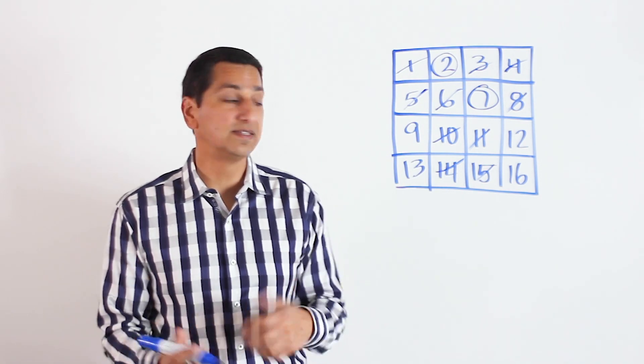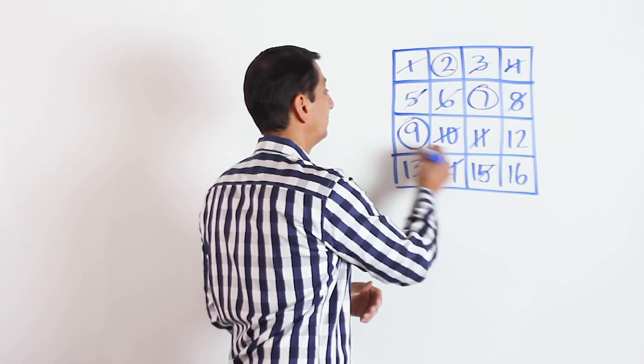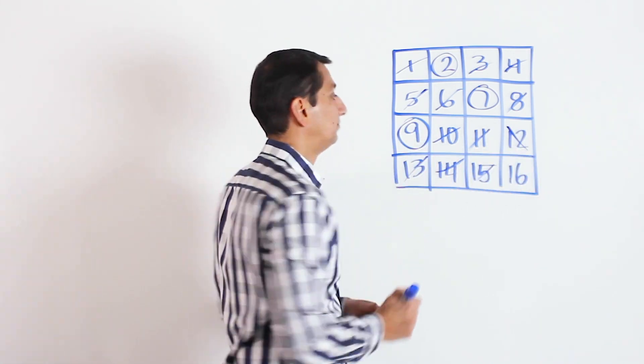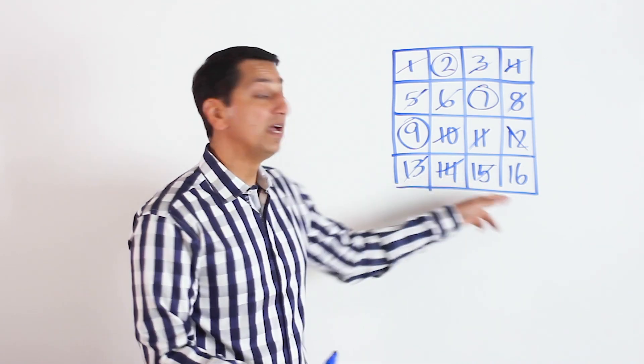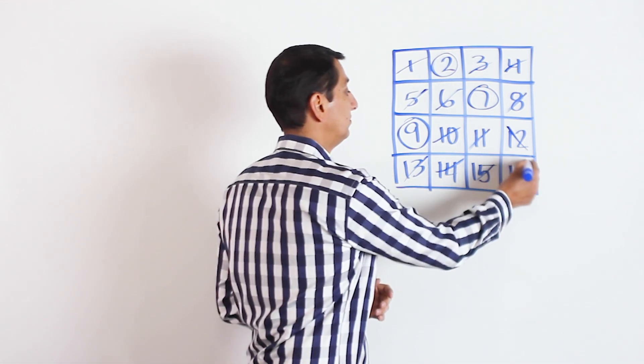Move to the third row and repeat. And finally, fourth row, pick a number in the fourth row. Only one choice. Bam.